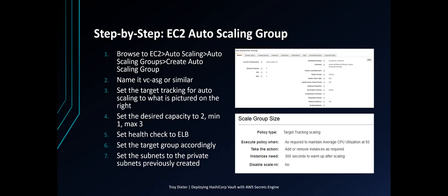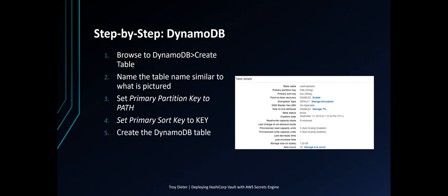Next, set the desired capacity to 2, minimum 1, maximum 3. In the picture I have 0, as I've scaled it down in the meantime. Set the health check to ELB so it uses the elastic load balancer health check we previously set. Set the target group accordingly, then set the subnets to the private zones and subnets created previously.